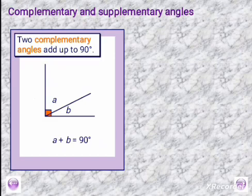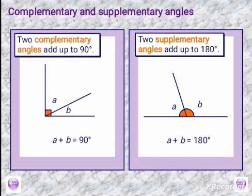Moving to complementary and supplementary angles. Complementary angles add up to 90 degrees. In the diagram, angle A plus angle B equals 90 degrees, so we say A is the complement of angle B. Supplementary angles are angles adding up to 180 degrees. Angle A and angle B together give 180 degrees, so angle A is the supplement of angle B.